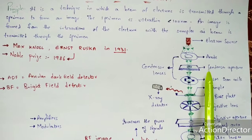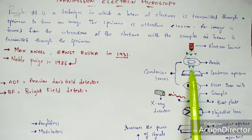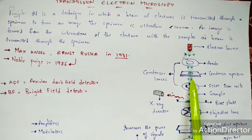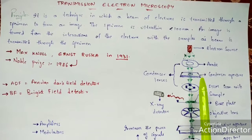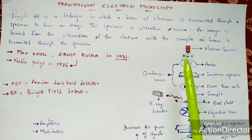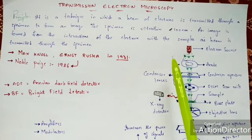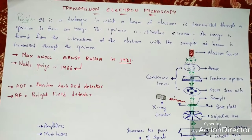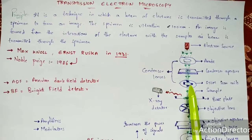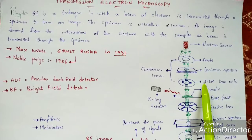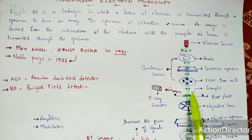The next part is the condenser aperture. The condenser aperture condenses the flow of electrons — condensing means bringing them to a single point. From there, the beam passes into the stem scan coil and finally reaches the base plate.